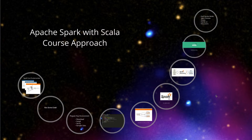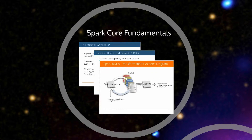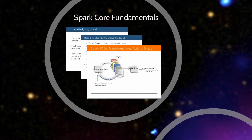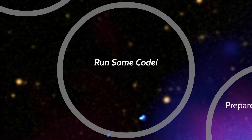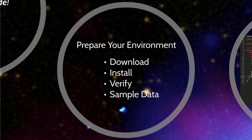How is this course structured? What will be the approach for learning Apache Spark with Scala? First, we're going to start off with covering the Spark core fundamentals. We'll cover things like resilient distributed data sets — RDDs — and then we'll talk about transformations and actions. From there, we're going to run some code and show these concepts with working code. Afterwards, we'll move to preparing your environment, making sure you can download, install, and verify you're able to run all of the sample code provided in this course.